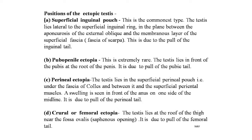Pubopenanal ectopia is extremely rare; the testis lies in front of the pubis at the root of the penis, due to the pull of the pubic tail. In perineal ectopia, the testis lies in the superficial perineal pouch under the fascia of Colles, between it and the superficial perineal muscles; a swelling is seen in front of the anus on one side of the midline, due to the pull of the perineal tail. In crural or femoral ectopia, the testis lies at the roof of the thigh near the fossa ovalis (saphenous opening), due to the pull of the femoral tail.